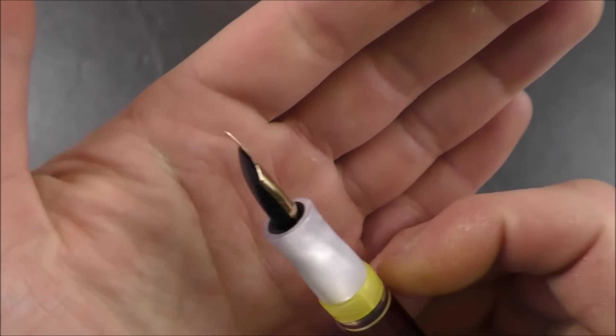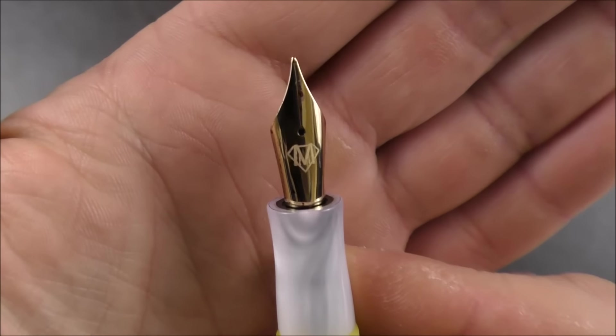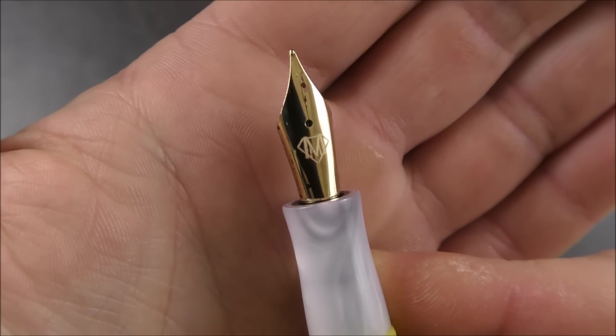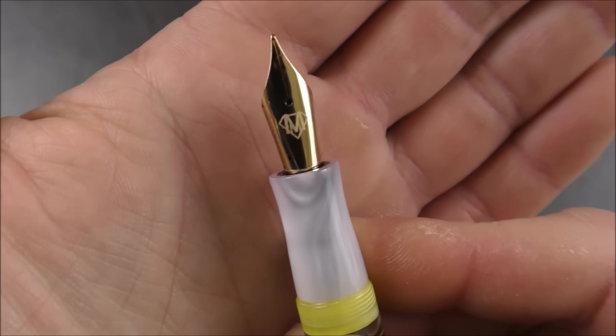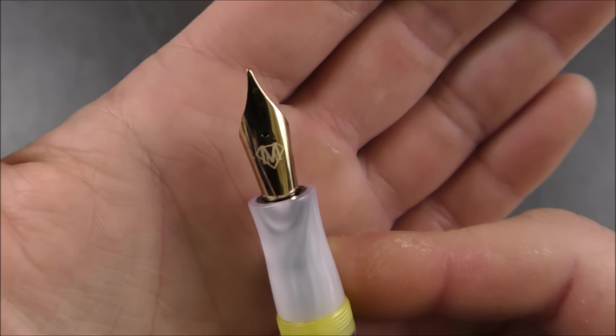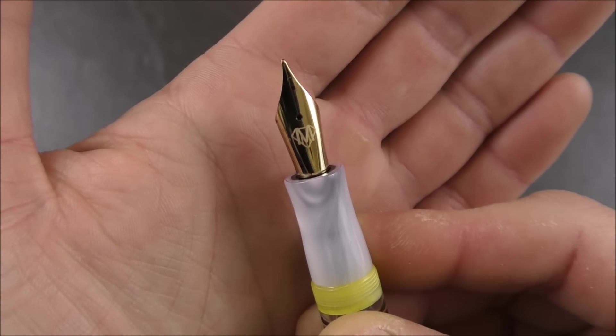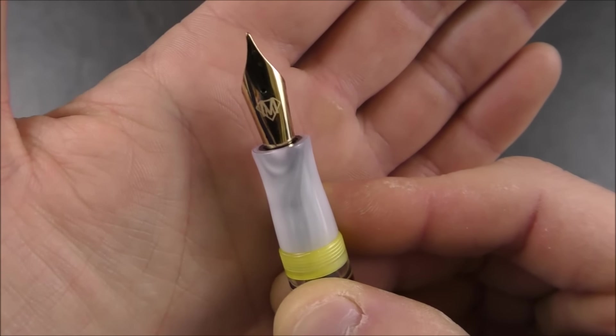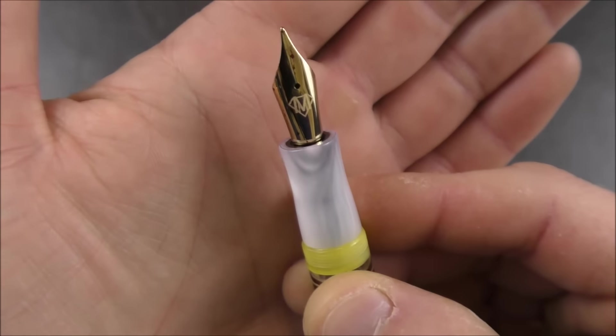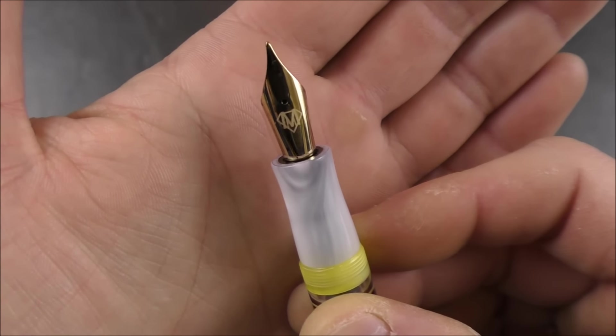And then the nib here is a number six size nib, and it's produced by Peter Bach in Germany. They make a lot of fountain pen nibs. I think they're the world's largest manufacturer of fountain pen nibs. And this is a steel nib, 18 karat gold plated, I believe.